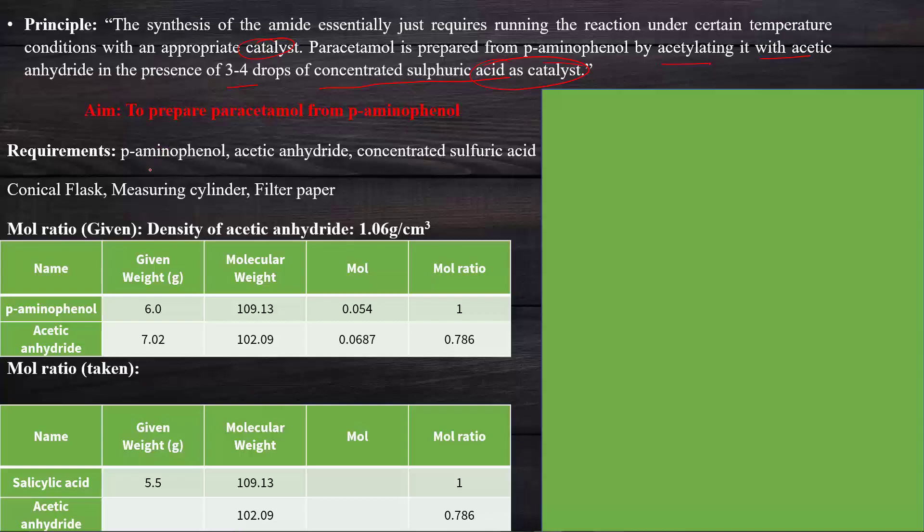The requirements: the chemical requirements are para-aminophenol, acetic anhydride, and concentrated sulfuric acid. The glassware requirements are conical flask, measuring cylinder and filter paper. Now we switch to our main property, the mole ratio. How to calculate the mole ratio of paracetamol?